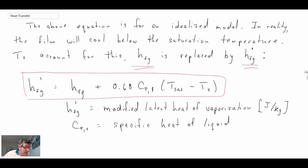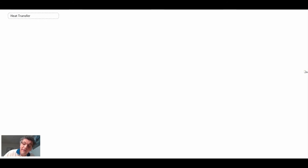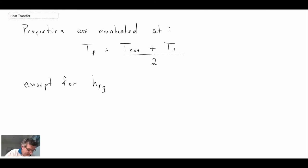Now where do we evaluate the properties? Well, I was showing it here by putting the F. The liquid properties should be evaluated at the film temperature. And so the film temperature is going to be your saturation temperature, which would be the saturation temperature for the particular pressure that you're looking at, plus the wall or surface temperature divided by two. And the exception here, except for HFG, so the heat of vaporization and the density of the vapor, those should be at T-sat.